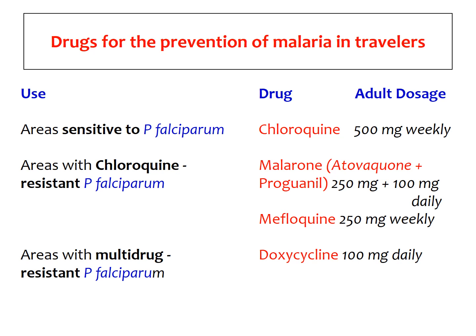There are some areas resistant not only to chloroquine but to many other drugs as well — multi-drug resistant areas with Plasmodium falciparum. Here, we usually use the long-acting tetracycline, doxycycline 100 mg daily. All these drugs are used as per schedule until the person is residing in that area where malaria is prevalent. They are started before entering that area and continued for the total stay of that person.